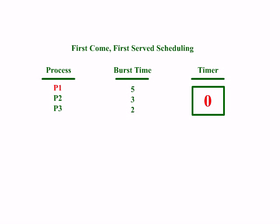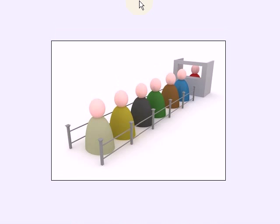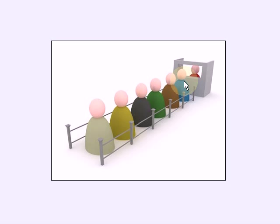FCFS derives its concept from real-life customer service. Let me explain with an example. Suppose this is a queue and these customers are waiting for service or any response from this operator. In our case, we will call this operator or server as the processor, and these are the processes which want to get executed on a particular system. So this process came first into the queue, so the processor will be executing this process first. Once the processor finishes executing this process, the next process will be getting executed. Unless the work of the current process is not completed, the next job will not be started. So this is FCFS — First Come First Serve.